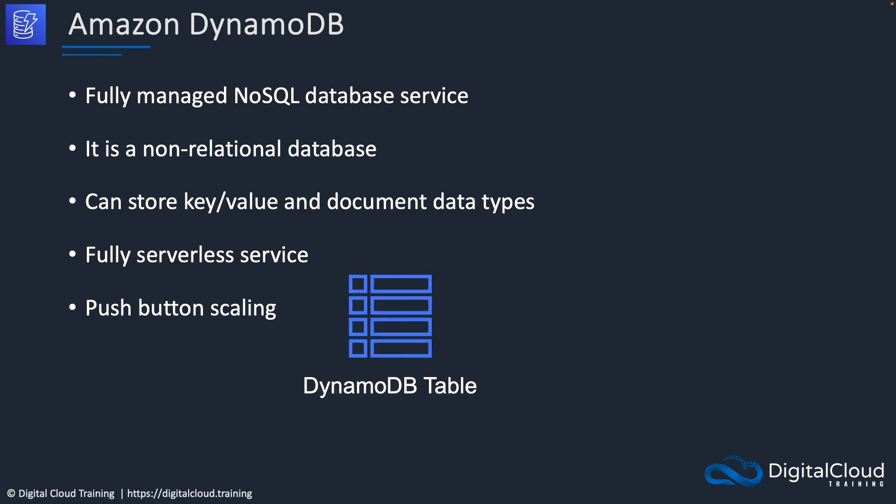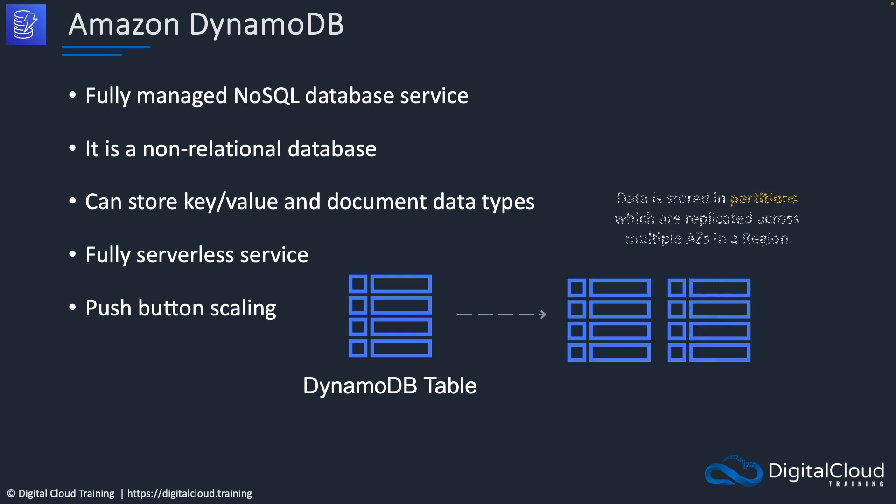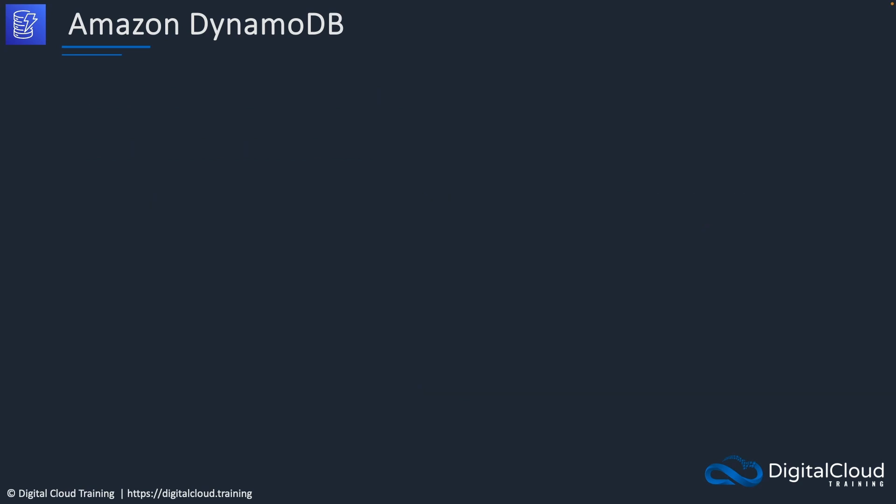In DynamoDB we have tables. The database is created by AWS and within it we create tables. Those tables are spread across partitions which are replicated across multiple Availability Zones in a region. You can think of DynamoDB as a database that scales horizontally rather than vertically.